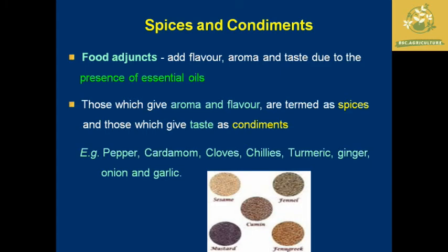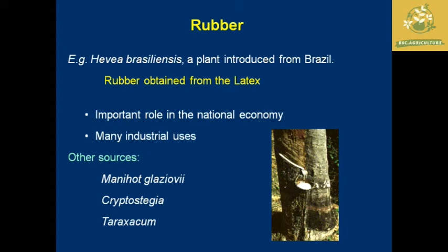Spices and condiments are cultivated mainly as food adjuncts. They create flavor, aroma, and taste due to the presence of essential oils. They have a major place in Indian food. Spices give aroma and flavor to food, while condiments change or enhance taste. Examples include pepper, cardamom, cloves, chillies, turmeric, ginger, onion, and garlic.